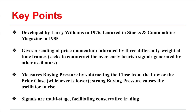The indicator provides a reading of price momentum by sampling three differently weighted time frames. This use of multiple time frames is intended to combat some of the problems with other oscillator indicators, such as premature signals that a trend is coming to an end. The Ultimate Oscillator calculates buying pressure by subtracting the close from either the low or the prior close, whichever is lower. An increase in this buying pressure reading will cause the indicator value to increase.